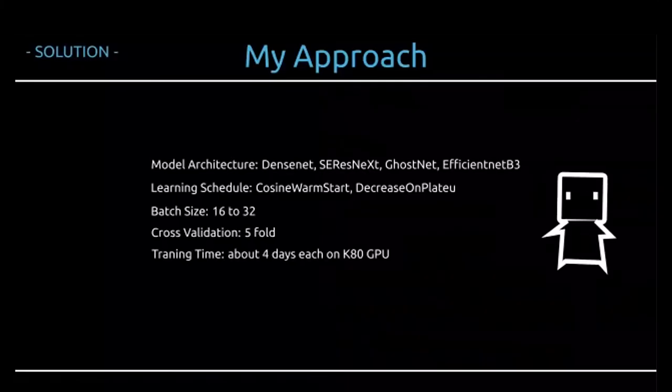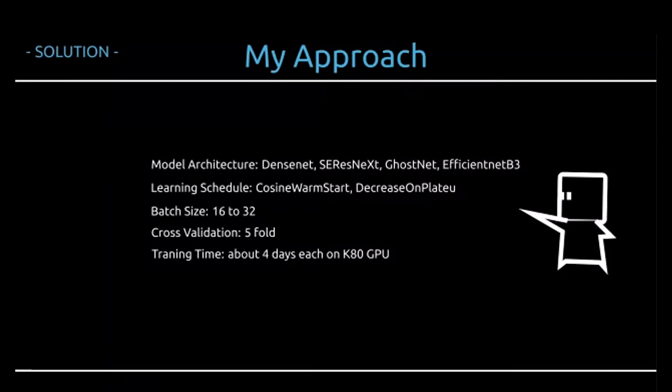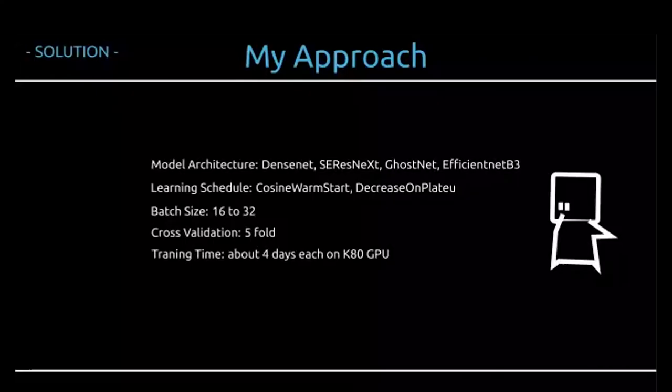And so in the end, I implemented an ensemble of several twisted double-headed models. DenseNet, SE, ResNeXt, GhostNet, EfficientNet B3, with various learning schedules, batch size, augmentations with five-fold cross-validation. Each trained for four days and fine-tuned them on K80 GPU. The highest accuracy I got is 97.35% on the test data set.